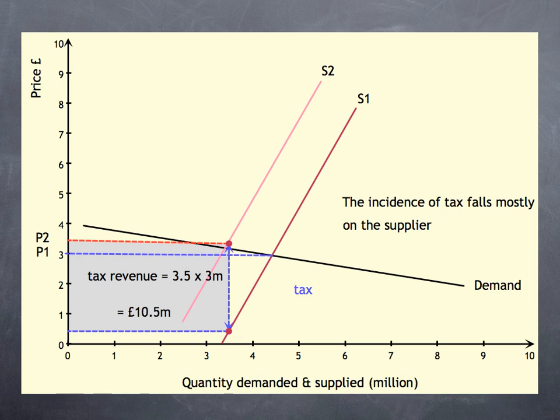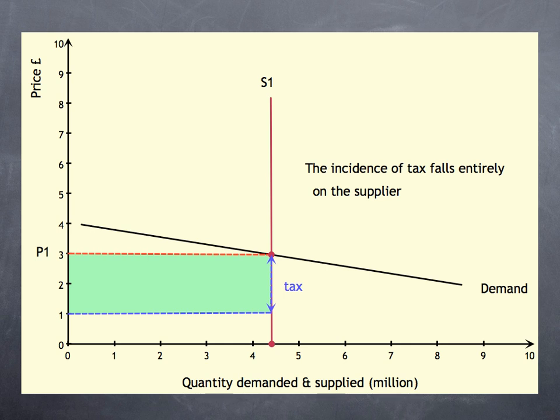What do you think would happen now if supply was perfectly inelastic? If the government put on a tax of £3, it would, in my example, wipe out all of the supplier's revenue. Here I've drawn what would happen if there was a £2 tax. And as you can see, the supplier has to pay all of it.